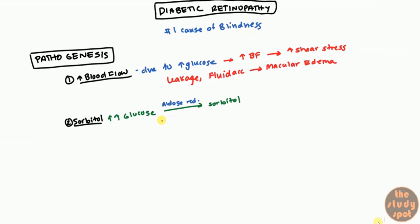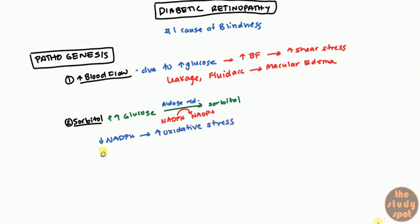The aldose reductase enzyme requires NADPH, so one of the initial problems that develops is low NADPH. As you probably remember, NADPH is required for glutathione, which is a reducing agent. With low NADPH, you get increased oxidative stress, kind of like G6PD but in the cells of the eye. Also, sorbitol is osmotically active, so it absorbs water into the cell, leading to further edema beyond just the edema caused by leakage from the vessels.